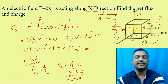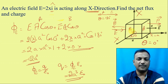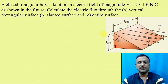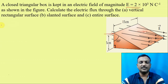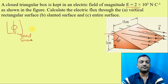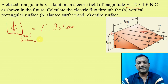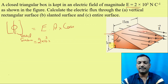This is the second problem. This is the electric field. There is a slant vertical surface and a slant surface. First we will go for the vertical surface. The formula is E into A into cos theta. The value of E is 2 into 10 cubed.